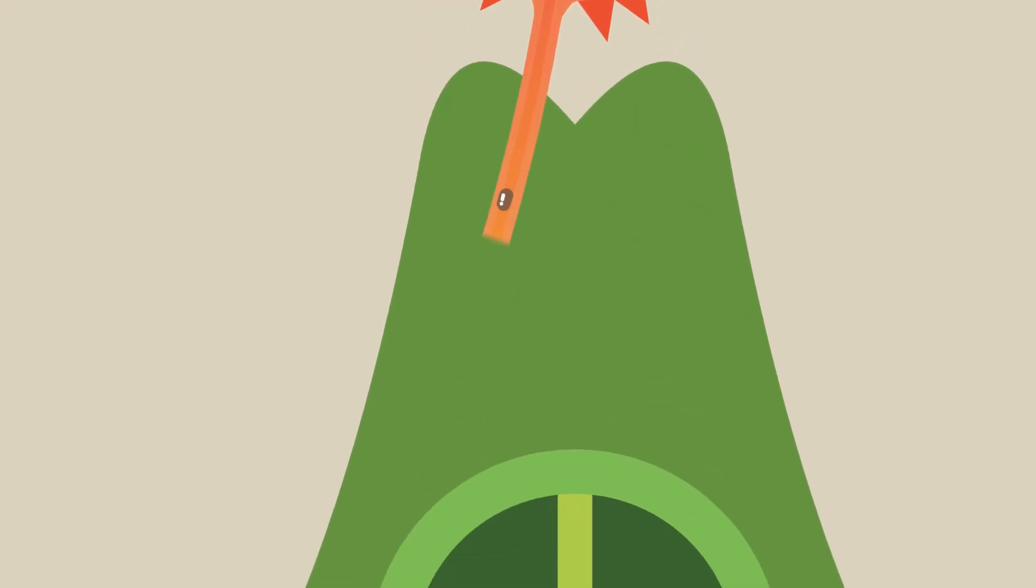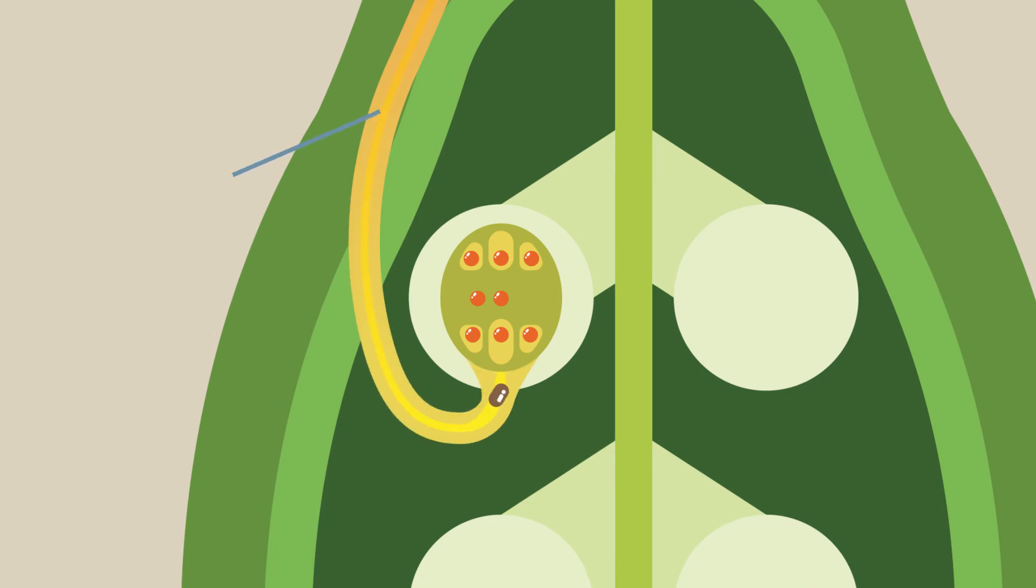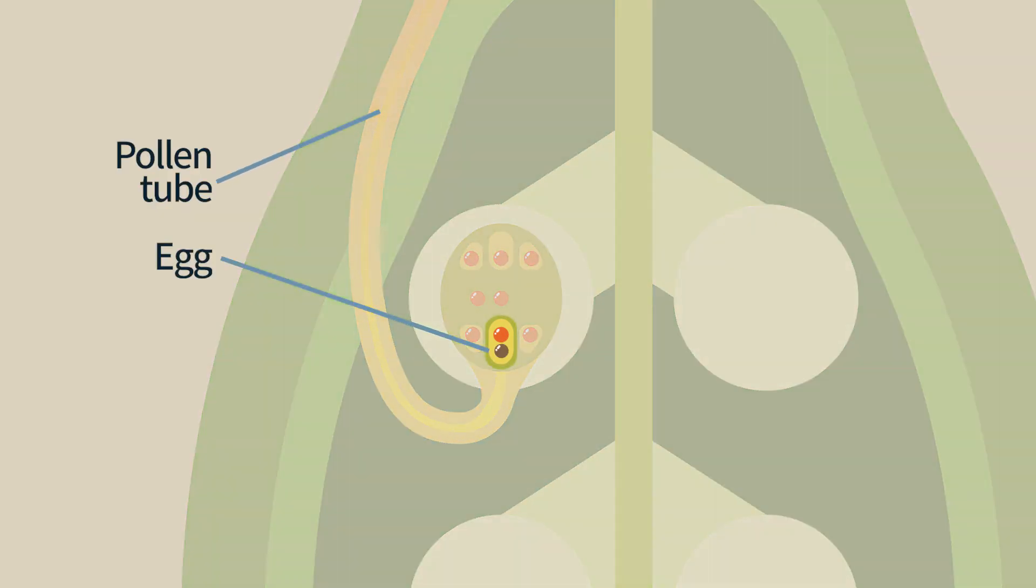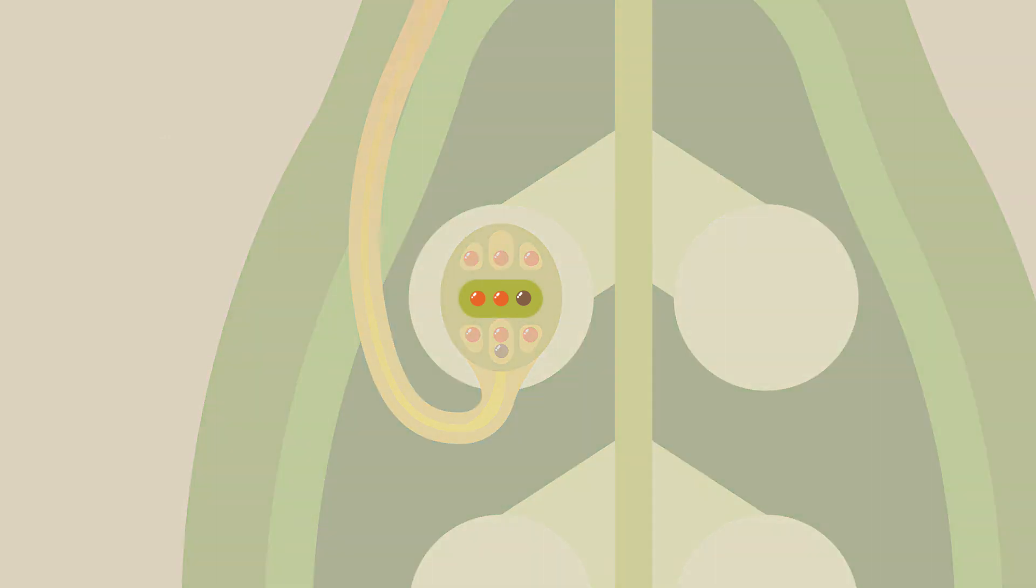One of these cells will fuse with the egg and fertilize it, giving rise to a diploid cell from which the embryo will develop. The second generative cell will fuse with the cell that will give rise to the endosperm. As this cell is already diploid, it will now be triploid, having three sets of chromosomes.